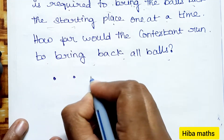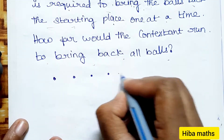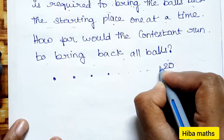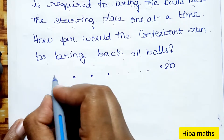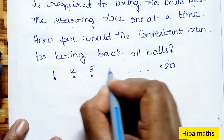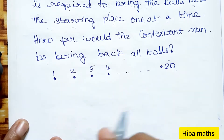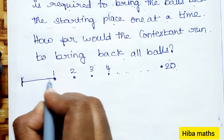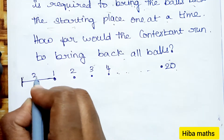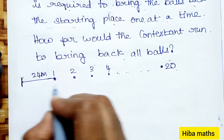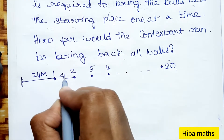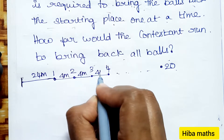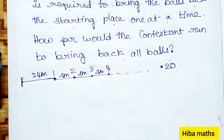So, there are 20 balls placed in a line. The first ball is 24 meters from the starting point. Each subsequent ball is 4 meters apart — that ball is 4 meters, that ball is 4 meters, and so on for all 20 balls.